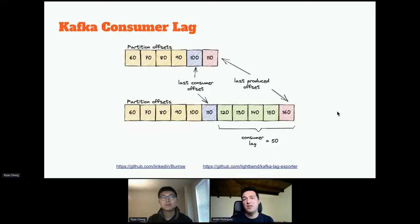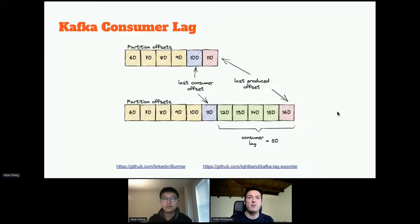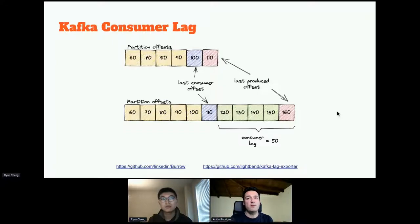Most of our incidents start with consumer lag. It's also a problem because it's hard to know initially whose issue it is — maybe the consumer, the Kafka platform team, or the producer. We need an external component to have this metric. There are good open source projects like Burrow from LinkedIn and the Kafka Lag Exporter. The benefit of the Kafka Lag Exporter is that it reports consumer lag also in seconds, which is much more useful than number of messages, as it gives an idea of the latency introduced and how long it will take to return to normal.